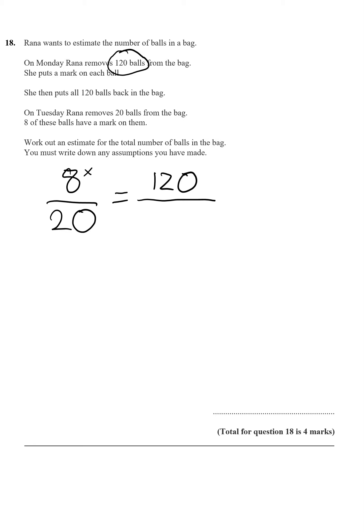So 8 times 15 is 120, and 20 times 15 is 300. Because they're in the same proportion, there were 300 balls in total.